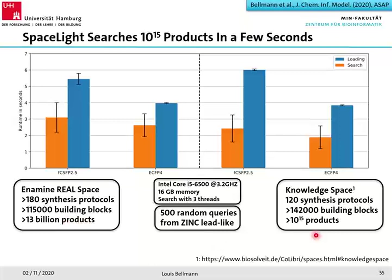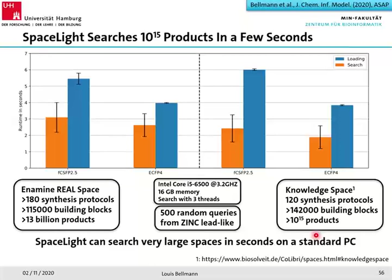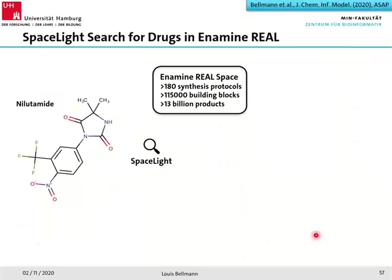This suggests you can even search spaces of 10^20 compounds within seconds using SpaceLight. The take-home message is that you can use SpaceLight to search on your own computer or laptop within seconds on these ultra-large chemical spaces.